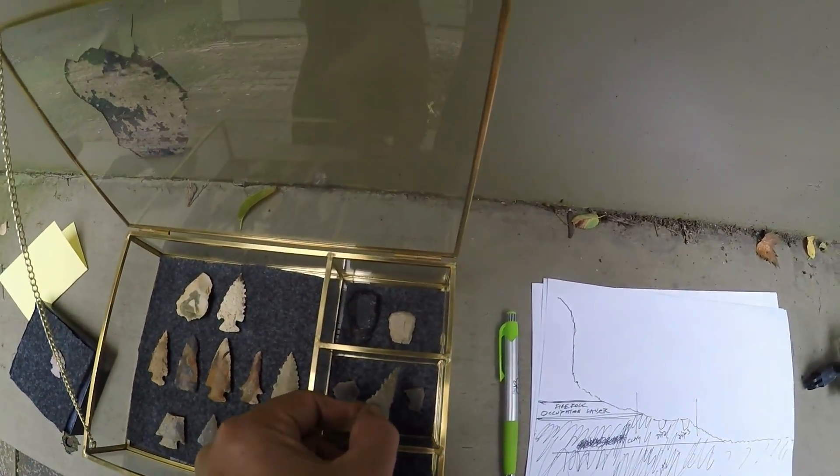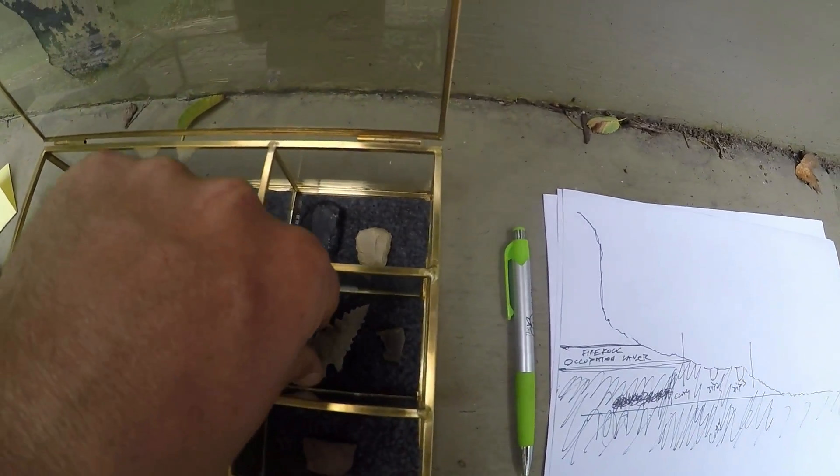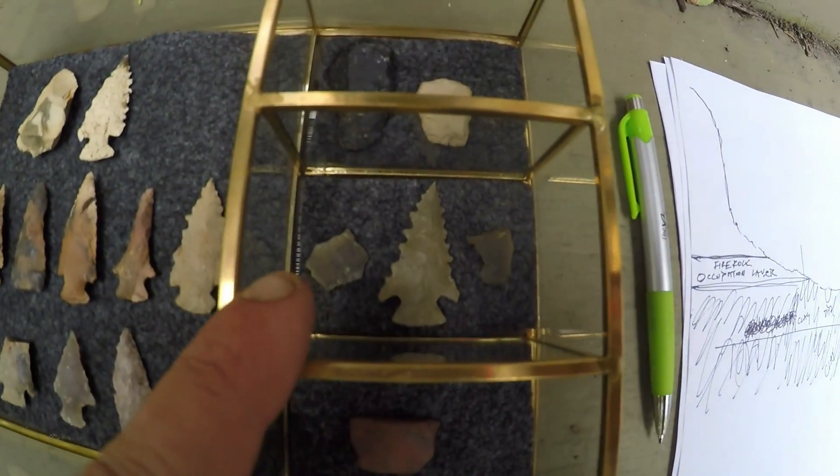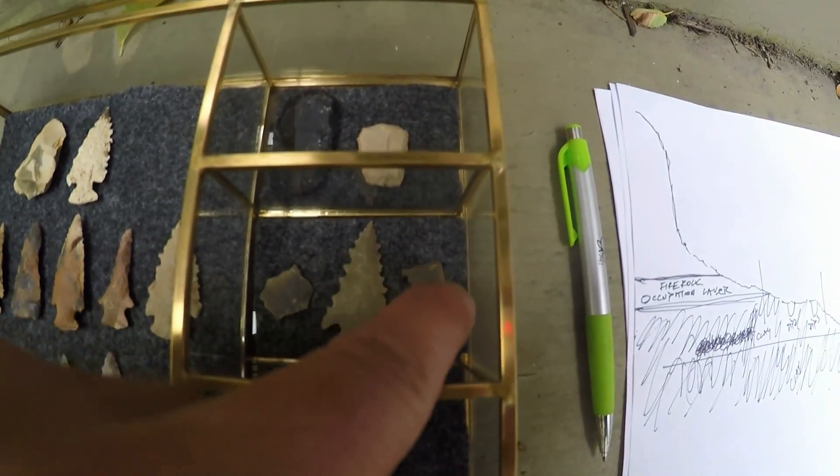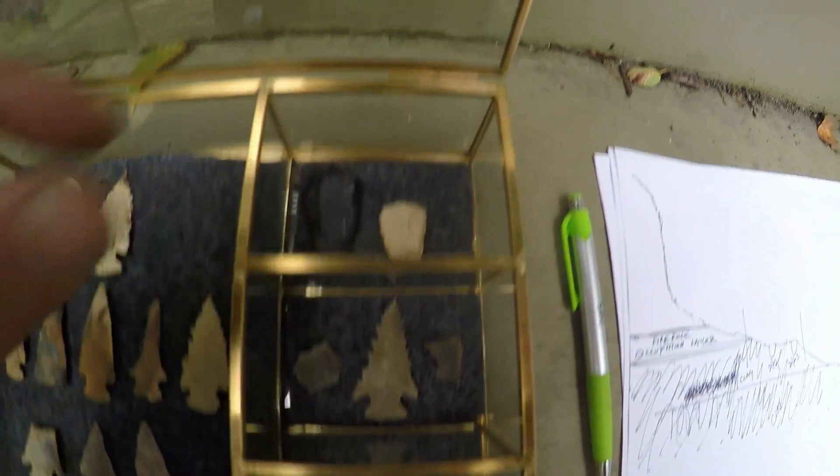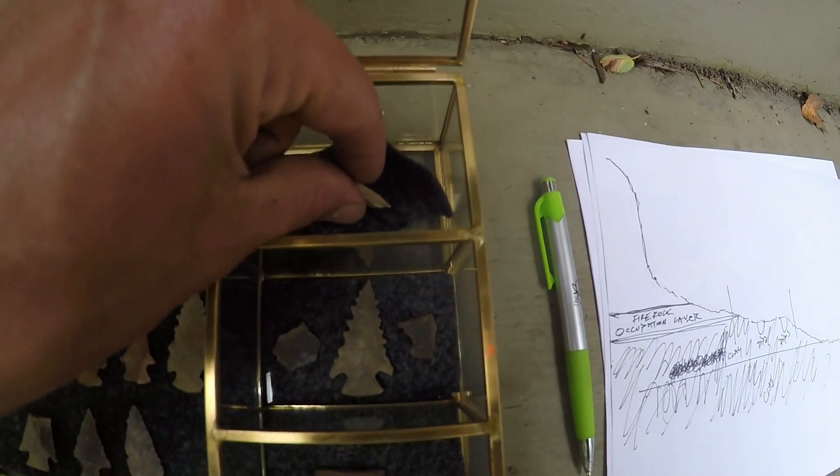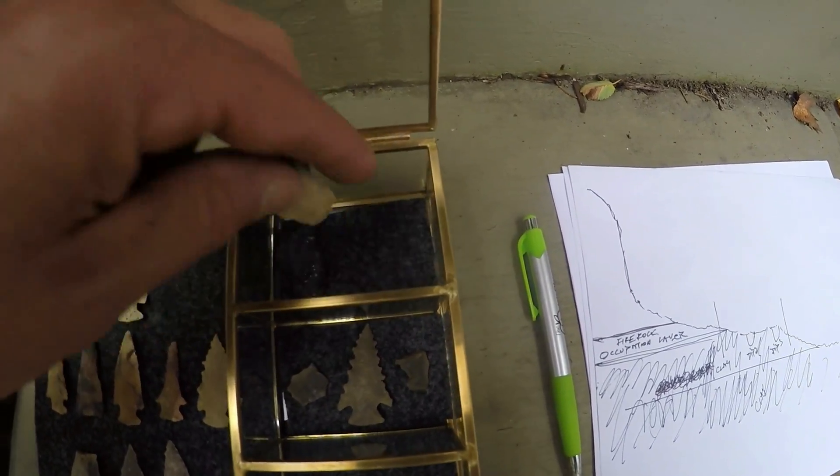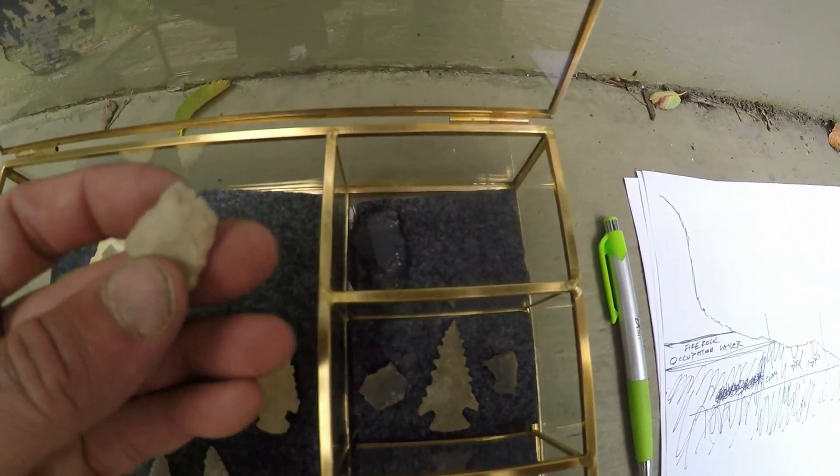And I also have two flakes off this. I got screened and it was smaller screen, right off the manufacture of this point. Got two nice end scrapers that are associated with these Amos points.